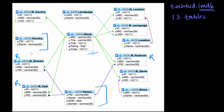We have another informative table which stores country information — country name and country ID. There is also a relation table establishing the relationship between country and the movie. Similarly we have language and location tables. This is the overall structure and design on which we will be performing SQL queries throughout the entire SQL course.